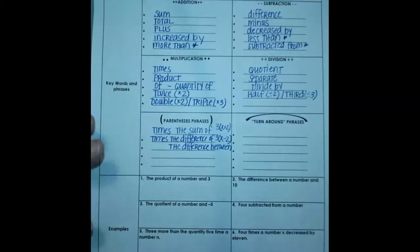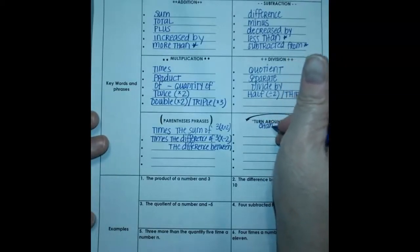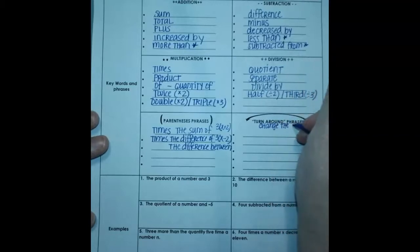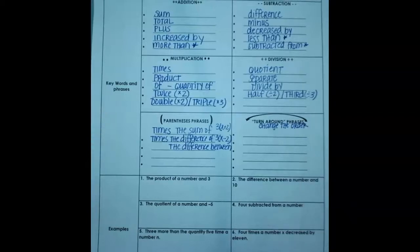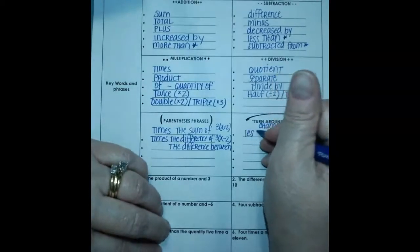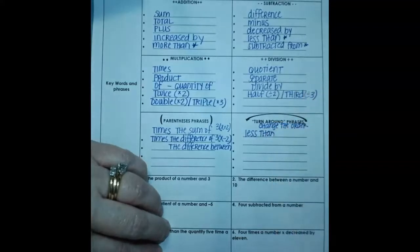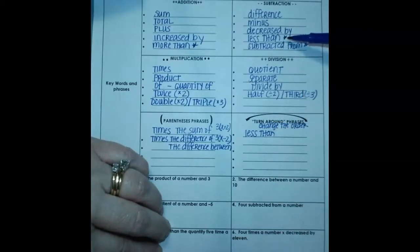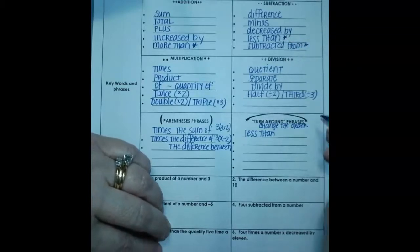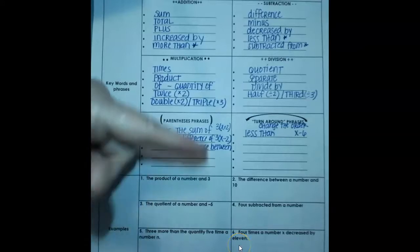Then we have turnaround phrases. Now what a turnaround phrase means is change the order. When you're reading this, most things you write them down in the order that they're written. If they say a number plus four, you'd say x plus four. But sometimes you have to change the order and there's clue words of when you're going to have to change the order. The one you're going to see a lot of times is less than. Remember, we mentioned up here when we were doing subtraction, less than, we put a star by him. That means he's a turnaround phrase. So six less than x is x minus six. You don't write it in the same order when it's one of these clue words.